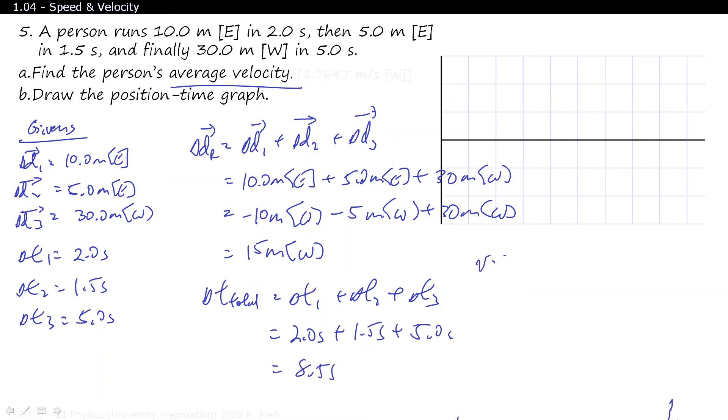To find out your velocity, your velocity is your displacement, total displacement, over total time. So total displacement of 15 meters west divided by 8.5 seconds gives you 1.7647 meters per second to the west. Taking a look at your givens, the worst case scenario is 2 sig figs, so that will round up to 1.8 meters per second to the west. And that would be your final answer.